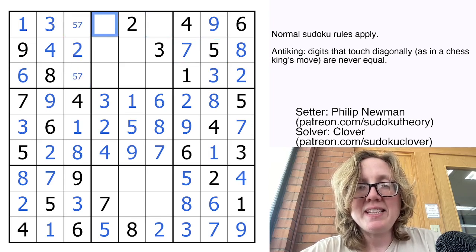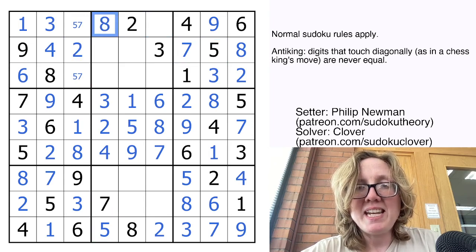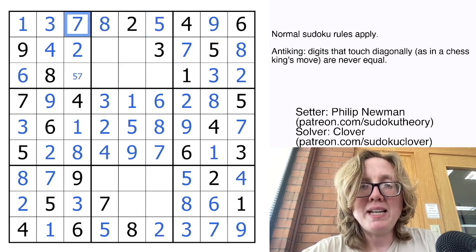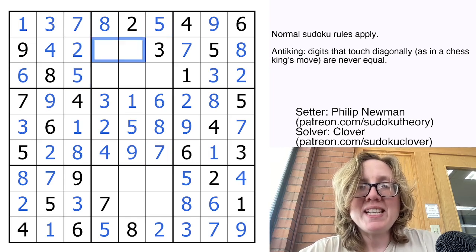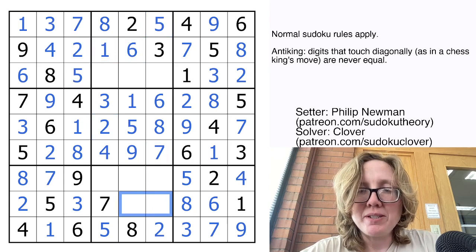Here I need 5, 7, and 8. This digit can't be 5 or 7, so it is an 8. This one can't be a 7, so it's a 5, and we've finished that row completely. Now what we need for this row is 1 and 6. They go in that order by ordinary Sudoku rules. Here we need a 4 and a 9, and now it's just going to be some cleanup.